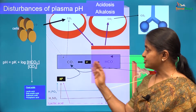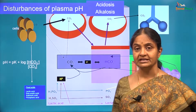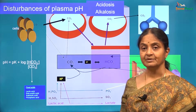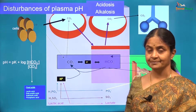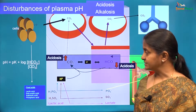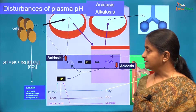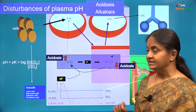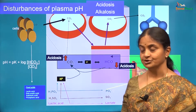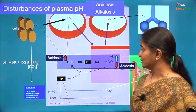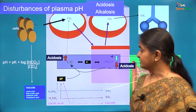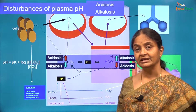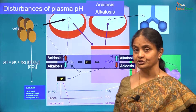Any change in the concentrations of carbon dioxide and bicarbonate can disturb the plasma pH. An increase in carbon dioxide or a decrease in bicarbonate will lead to acidosis, whereas an increase in bicarbonate or a decrease in carbon dioxide will lead to alkalosis.